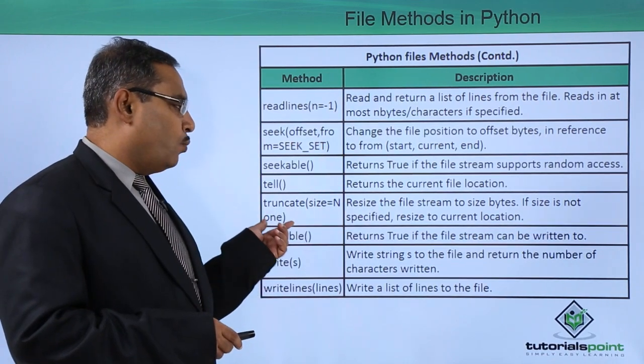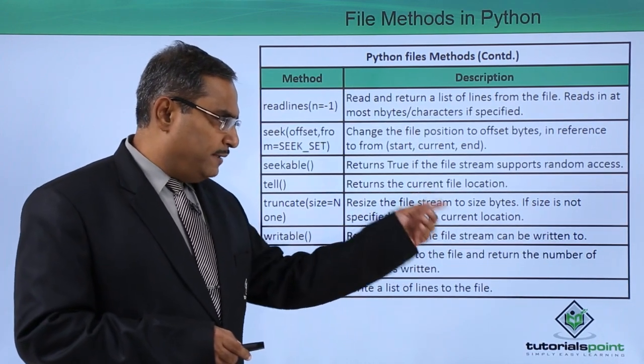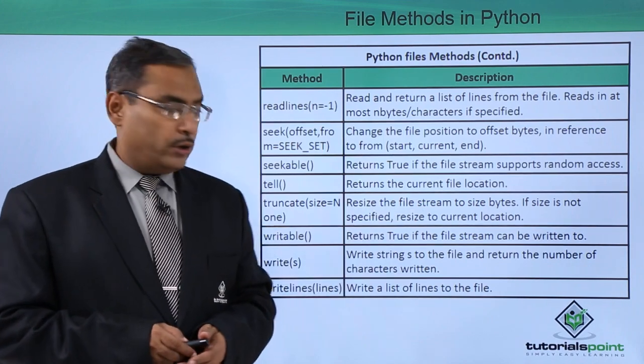Truncate size equals n1. Resize the file stream to size bytes and if the size is not specified resize to current location.